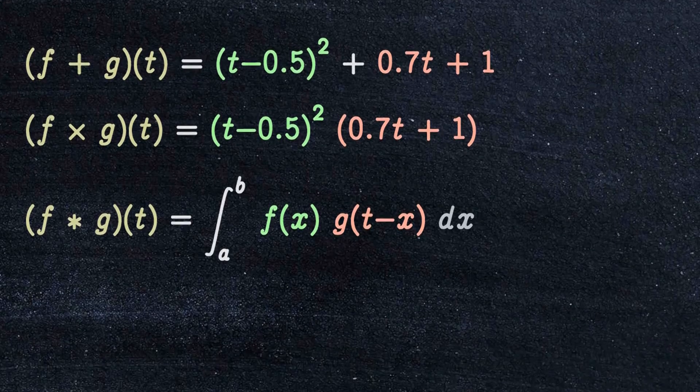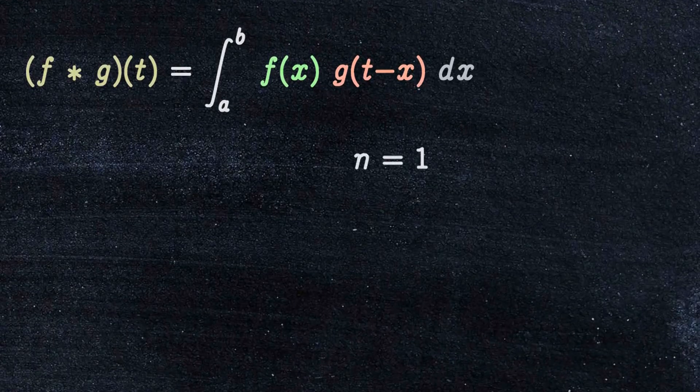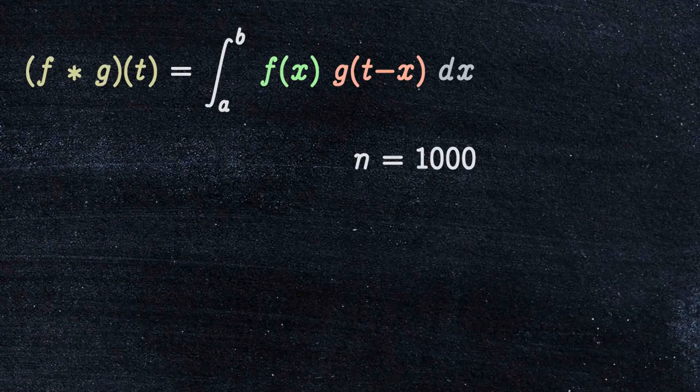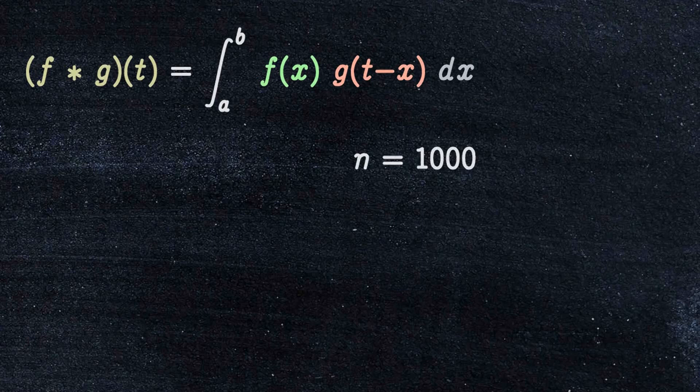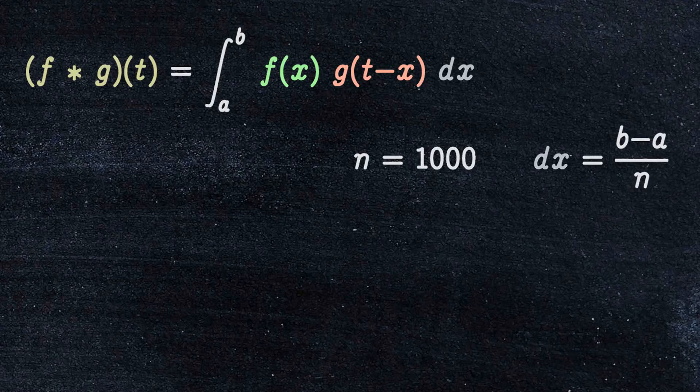If we set a variable with a high enough positive number, like 1000 for example, we can approximate this integral with a Riemann sum. Differential of x is going to be equal to b minus a divided by n. Therefore, we can approximate this integral in the following way.